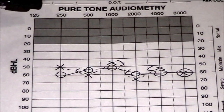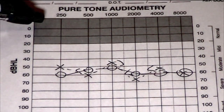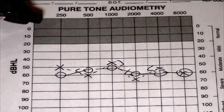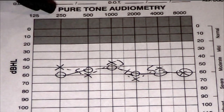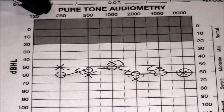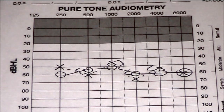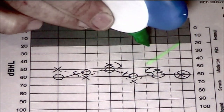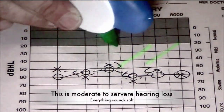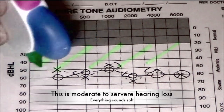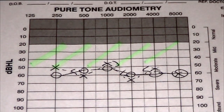On this hearing test we can see the marks are all down below the normal level, from the low frequency all the way across to the high frequency. So for a hearing loss like this the person would have trouble hearing almost all sounds — in fact everything would sound quite soft.